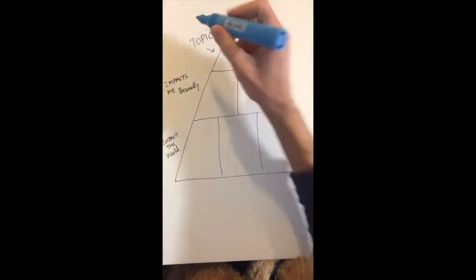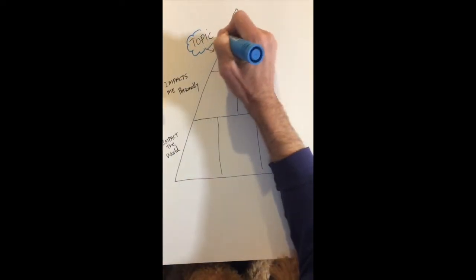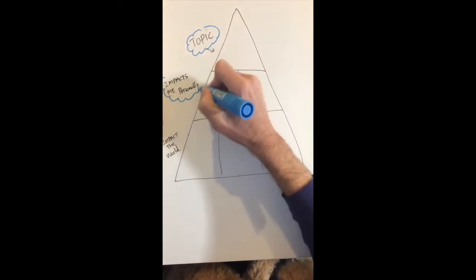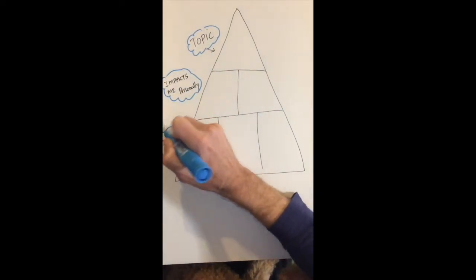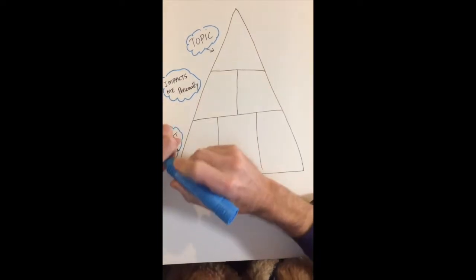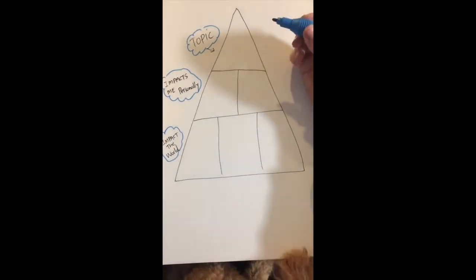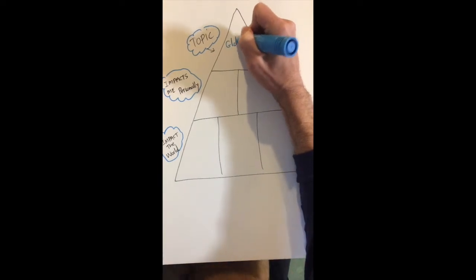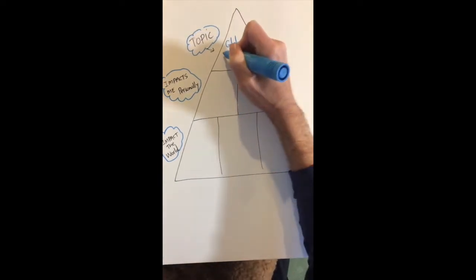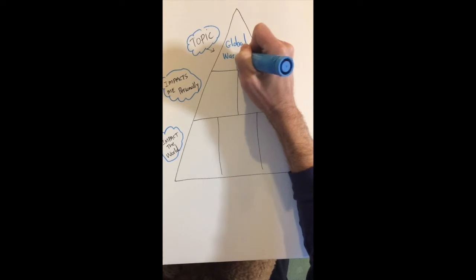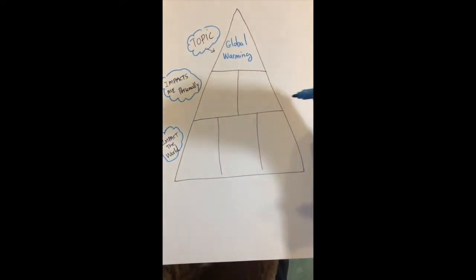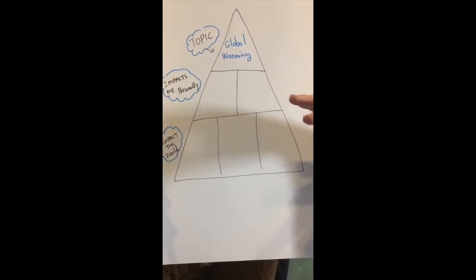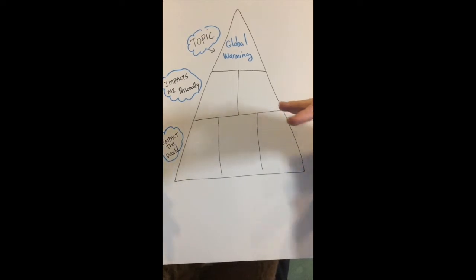I'm going to use a little color just for fun. So let's say, for example, my first topic or one idea that I want to investigate is global warming. I'm going to write that right in the top - global warming.